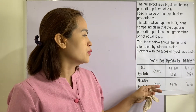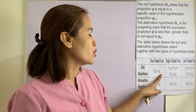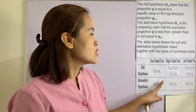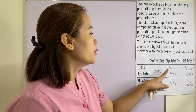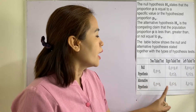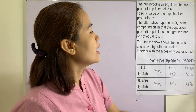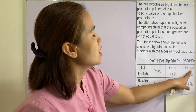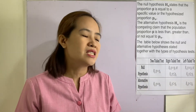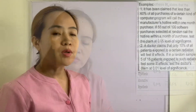The table below shows the null and alternative hypotheses stated together with the types of hypothesis test. For a two-tailed test, the null hypothesis is p = p₀ and the alternative is p ≠ p₀. For the right-tailed test, the null is p = p₀ (or p ≤ p₀) and the alternative is p > p₀. For the left-tailed test, the null is p = p₀ (or p ≥ p₀) and the alternative is p < p₀.